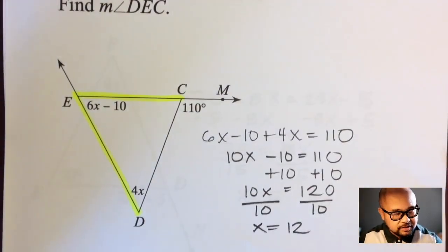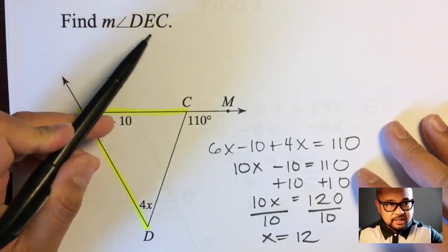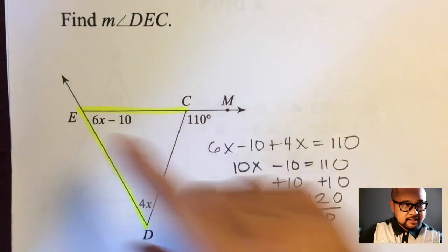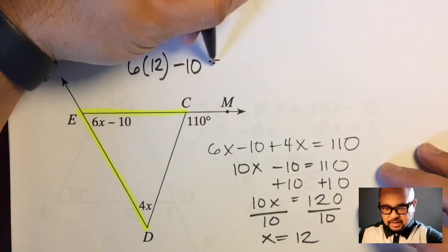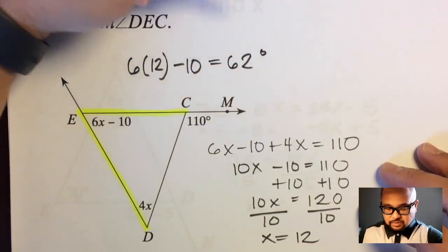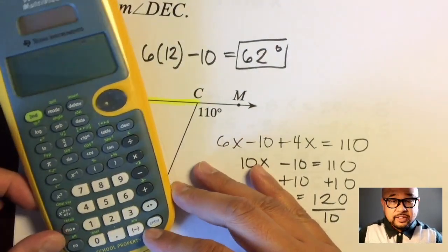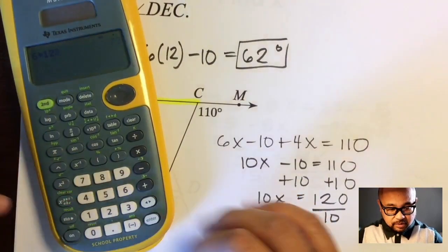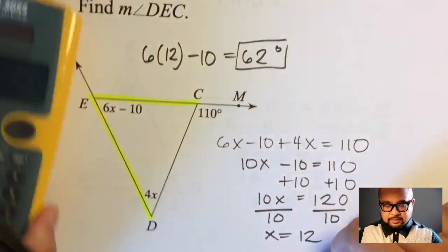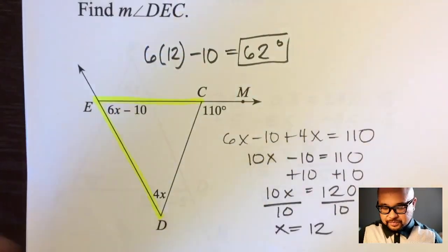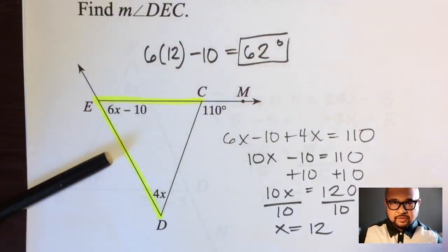Don't stop there — x is not the final answer. We need the measure of angle DEC. Plug 12 back in: 6 times 12 minus 10 equals 72 minus 10, which is 62 degrees. That is the final answer. And that's the Exterior Angles Theorem — hope that helps you get A's. Have a great day.